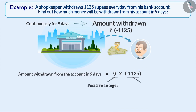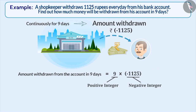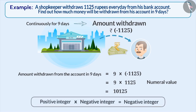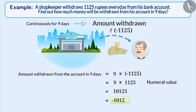Here, a positive integer is getting multiplied with a negative integer. To multiply one negative and one positive integer, first we will multiply their numeral values. The product of 9 into 1125 will be 10125. We already know that when a positive integer is multiplied with a negative integer, the product is always a negative integer. Therefore, the result will be minus 10125.